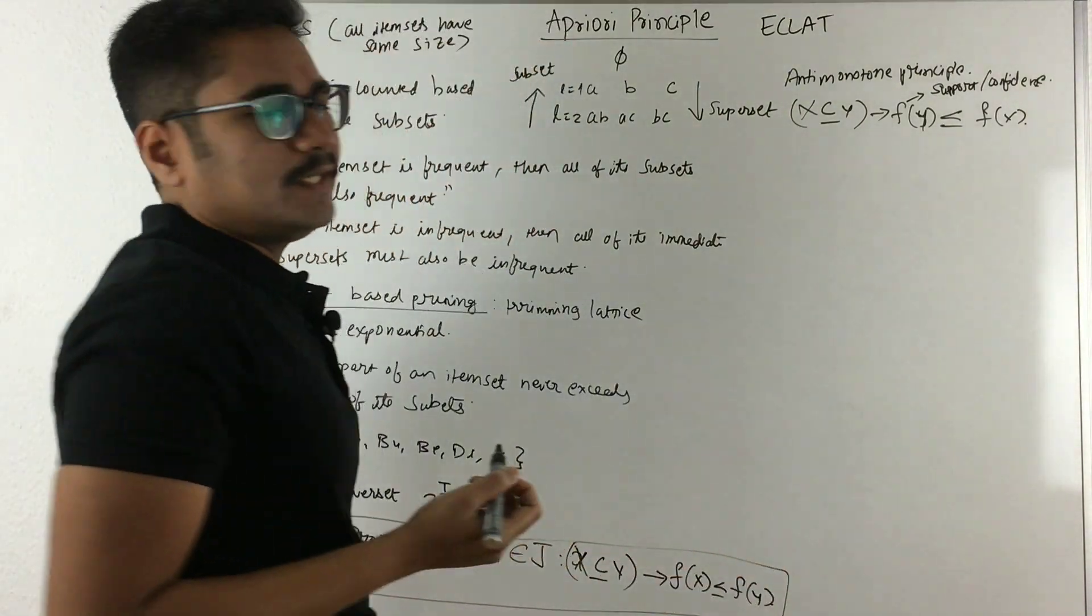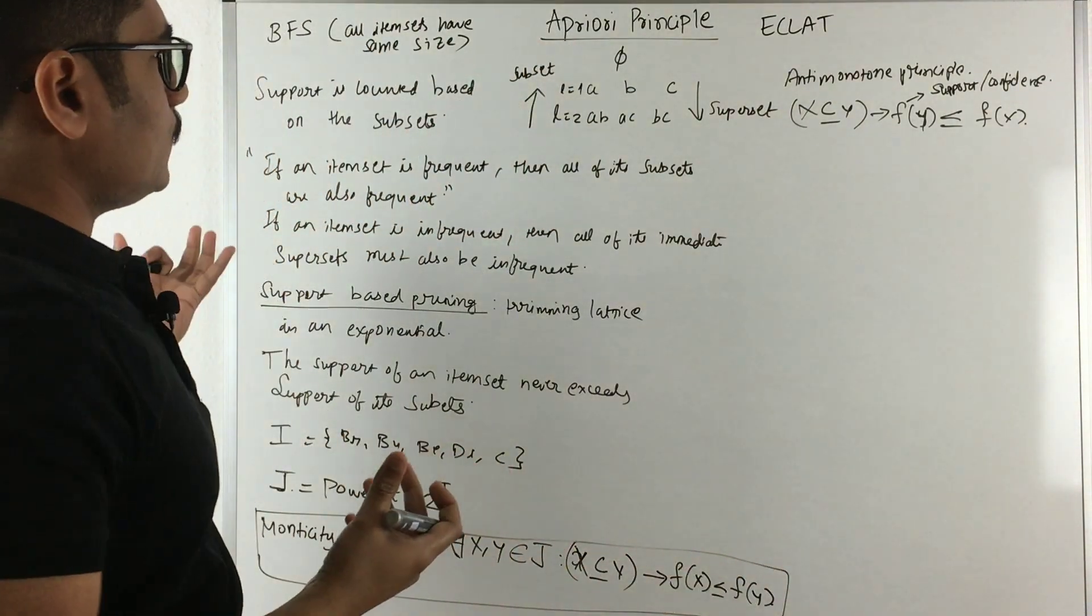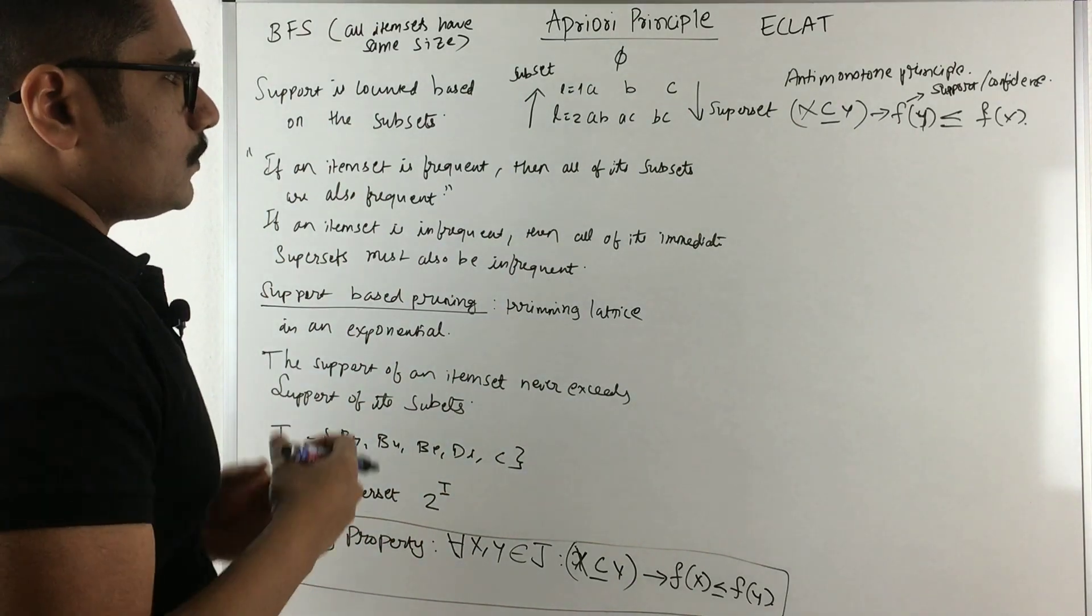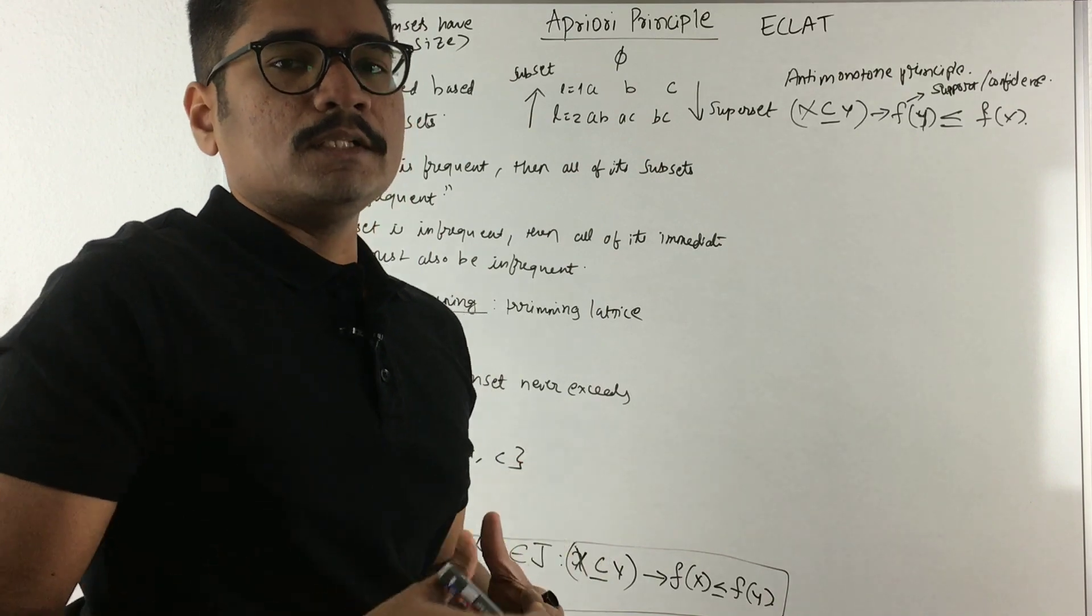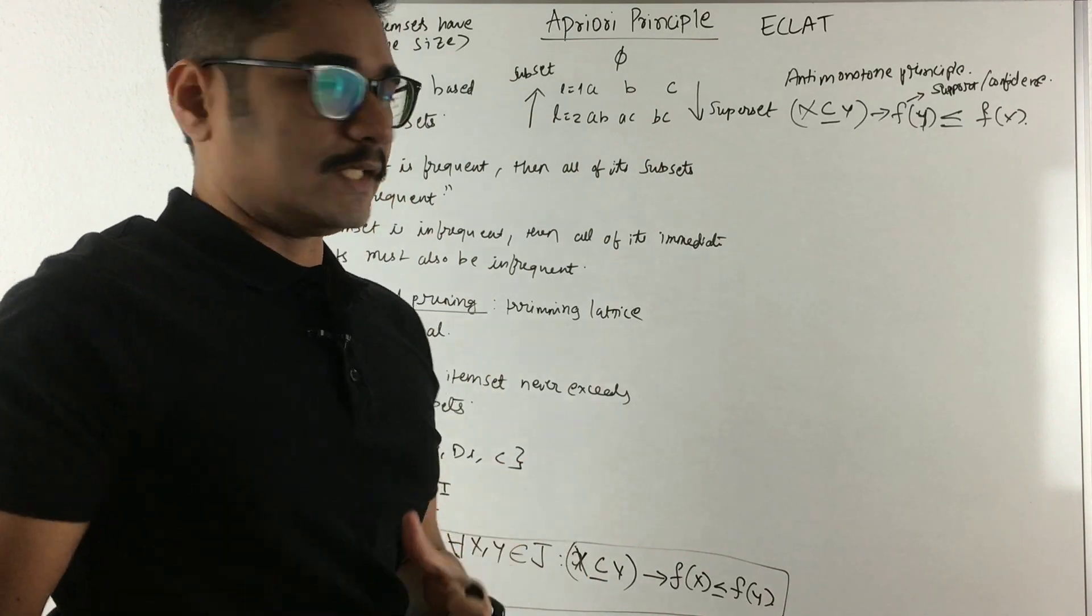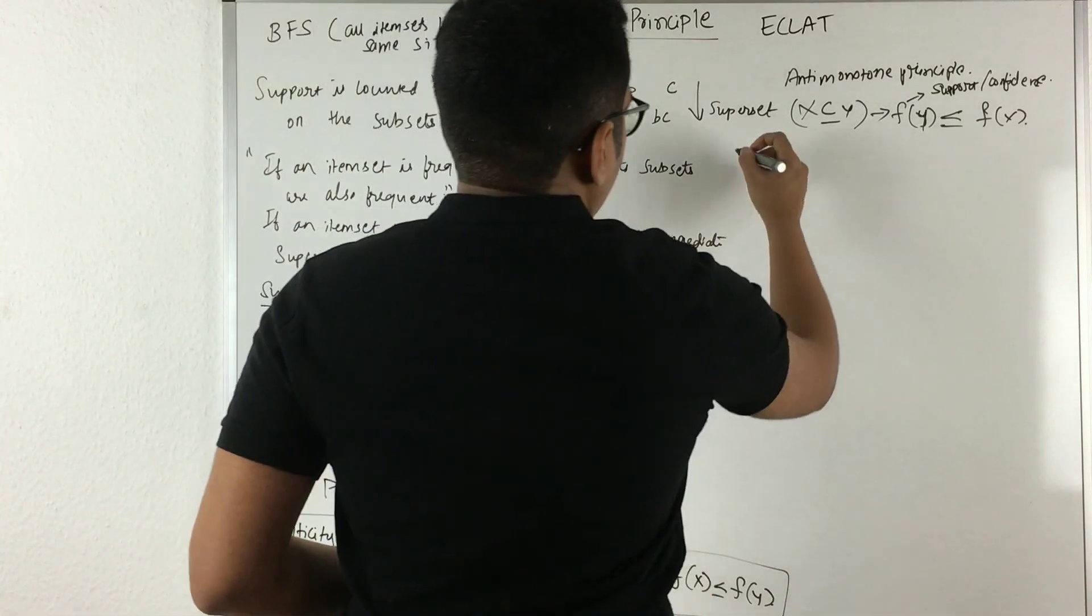Next, what we have is we'll define some terms based upon the frequent item set. We already know what is a frequent item set: its support should be greater than or equal to the minimum support, that is a defined parameter or threshold.